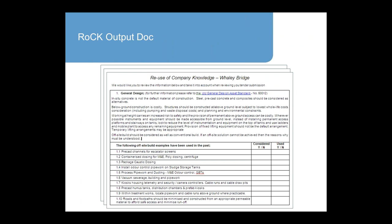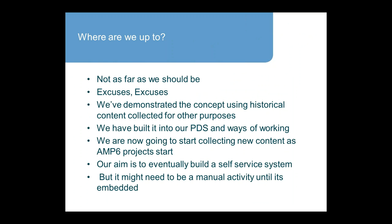What we end up with is an output sheet that looks something like this — this is one that we tried for Whaley Bridge. Effectively what it does is give a list of all the good ideas for the project team to consider. In terms of where we are at the moment, we're not as far as we should be. What we have done is demonstrated the concept using historical content collected for other purposes. We've built the ROC into our project delivery system and our ways of working, and we're now going to start collecting new content as AMP 6 projects start.